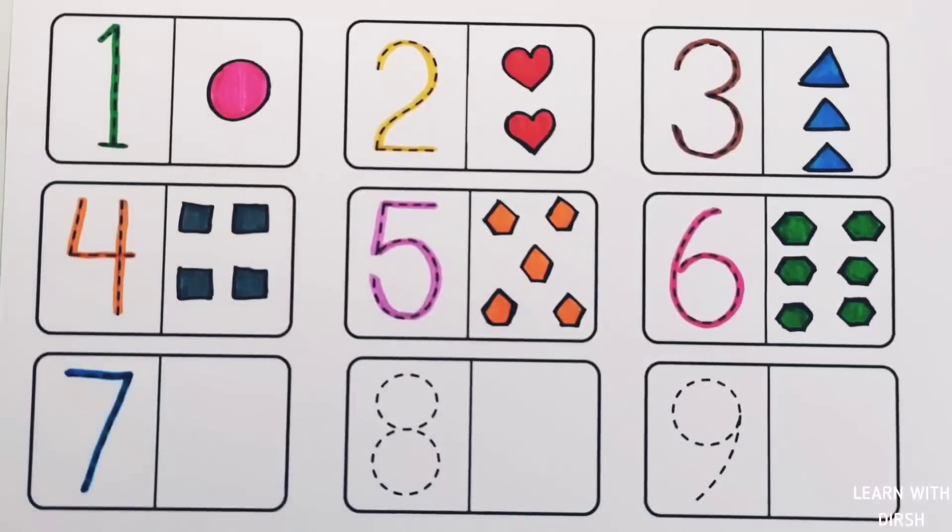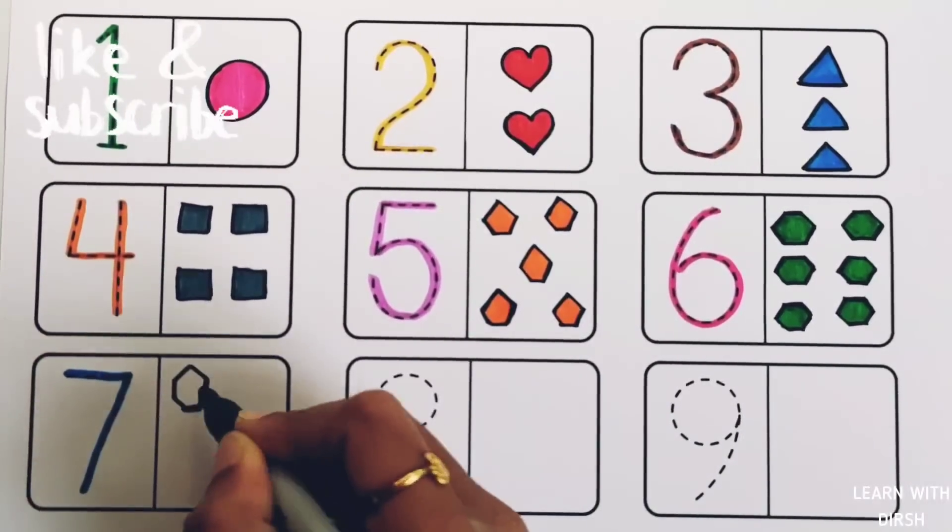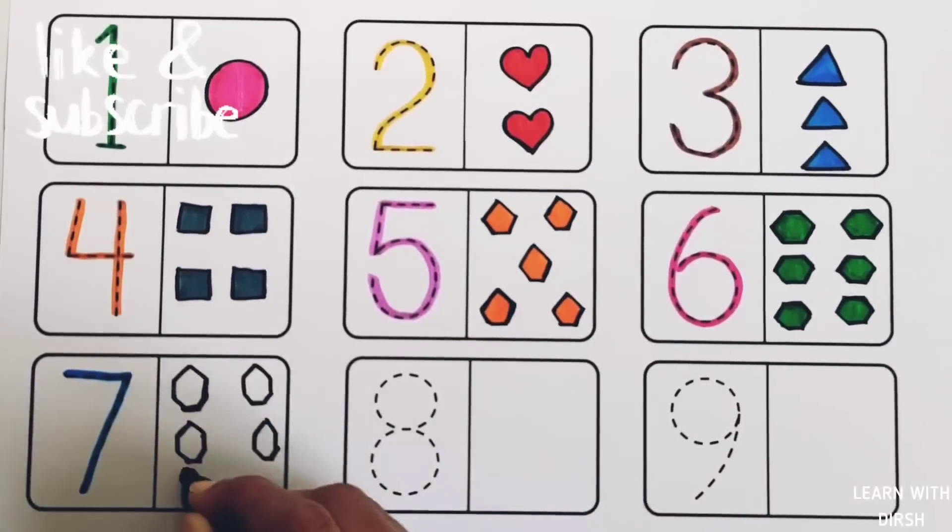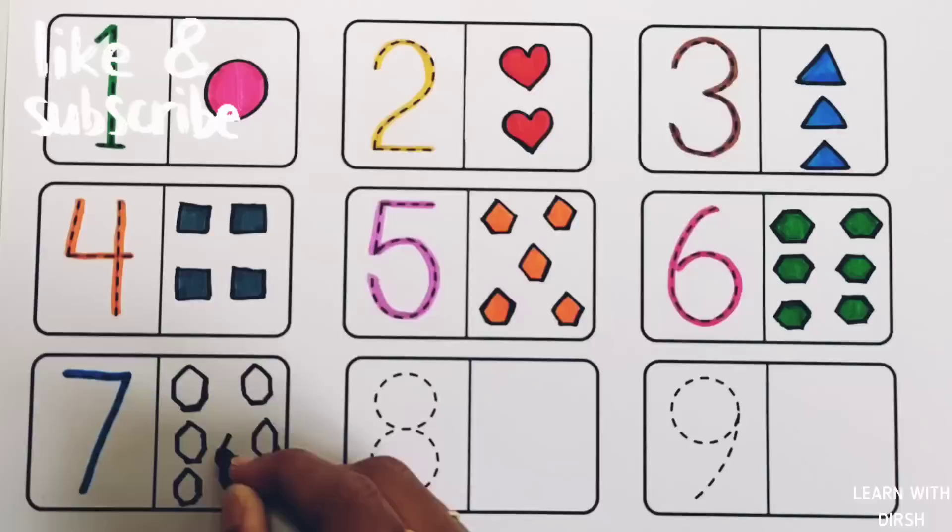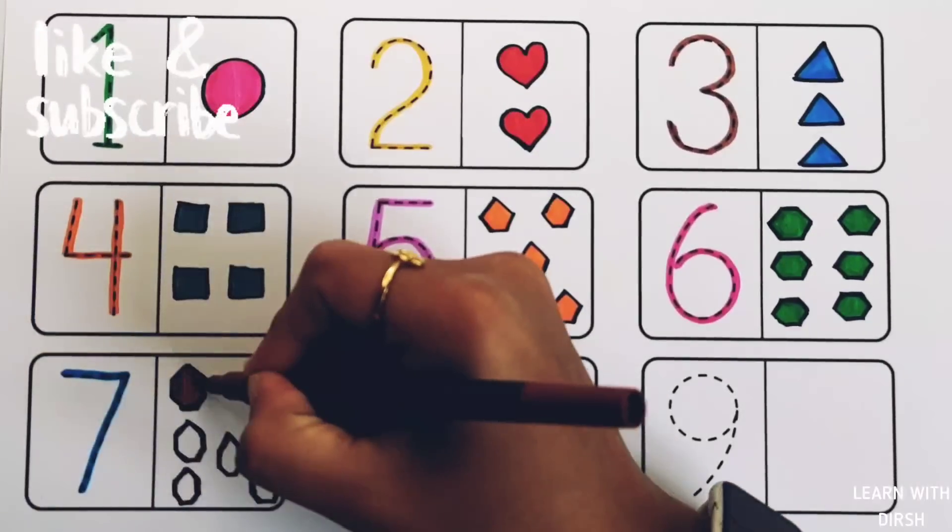Number seven: seven hexagons, brown color.